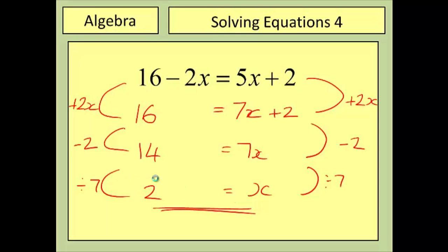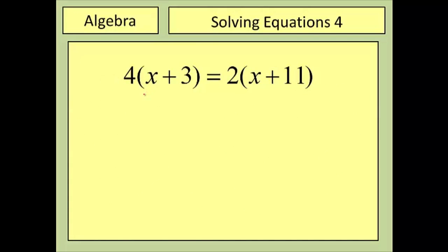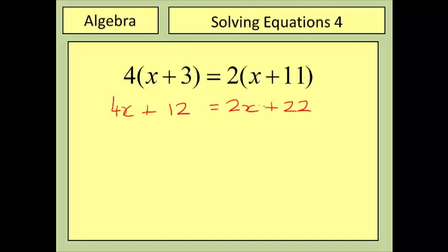This third and final example introduces some brackets as well. As in previous videos, our first step is to expand the brackets: four times x gives 4x, and four times three gives 12, so the left side is 4x plus 12. This equals two times x which is 2x, plus two times 11 which is 22. The brackets have now disappeared.